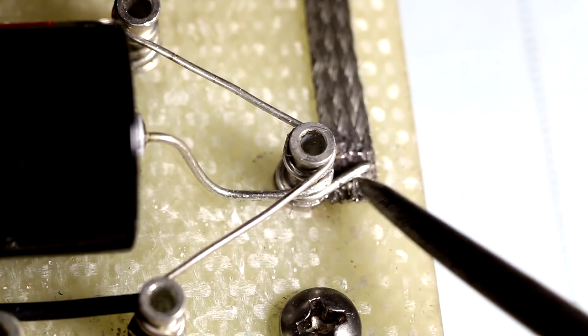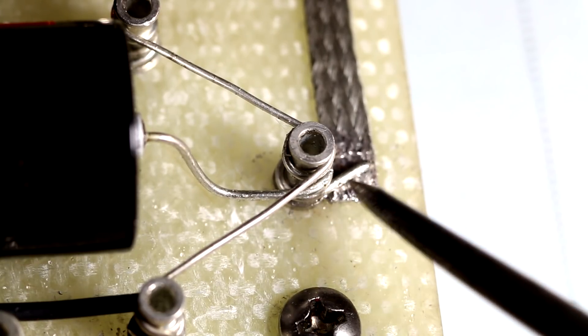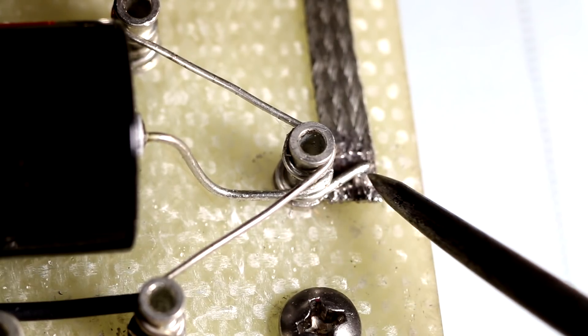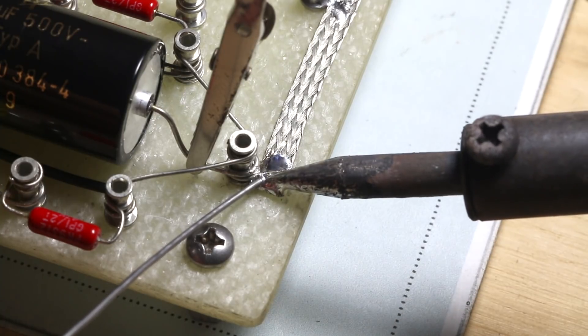I always like to leave a little bit extra from wrapping around the turret from the electrolytic, just to let it sit over the earth strap there to give another more solid grounding point from the turret.